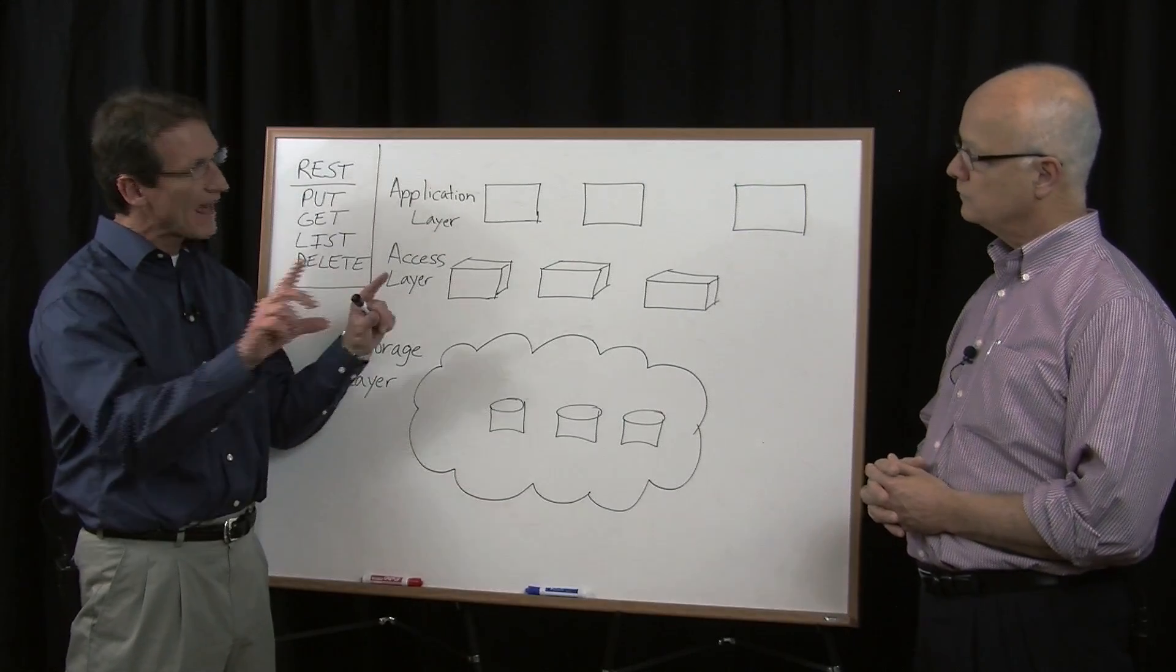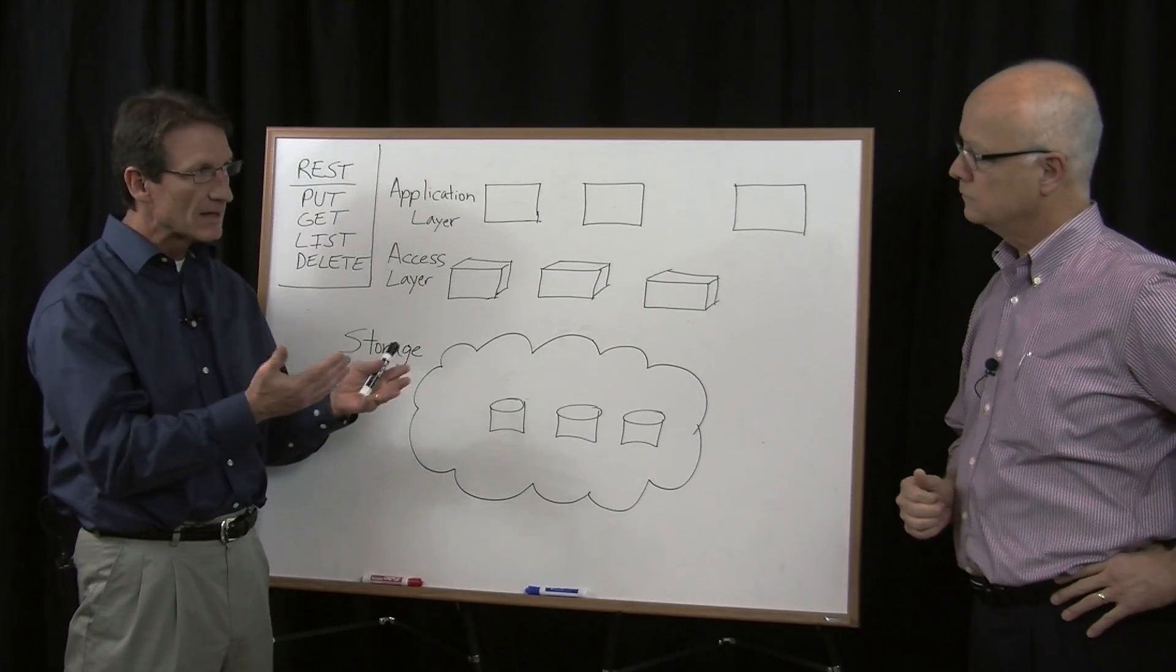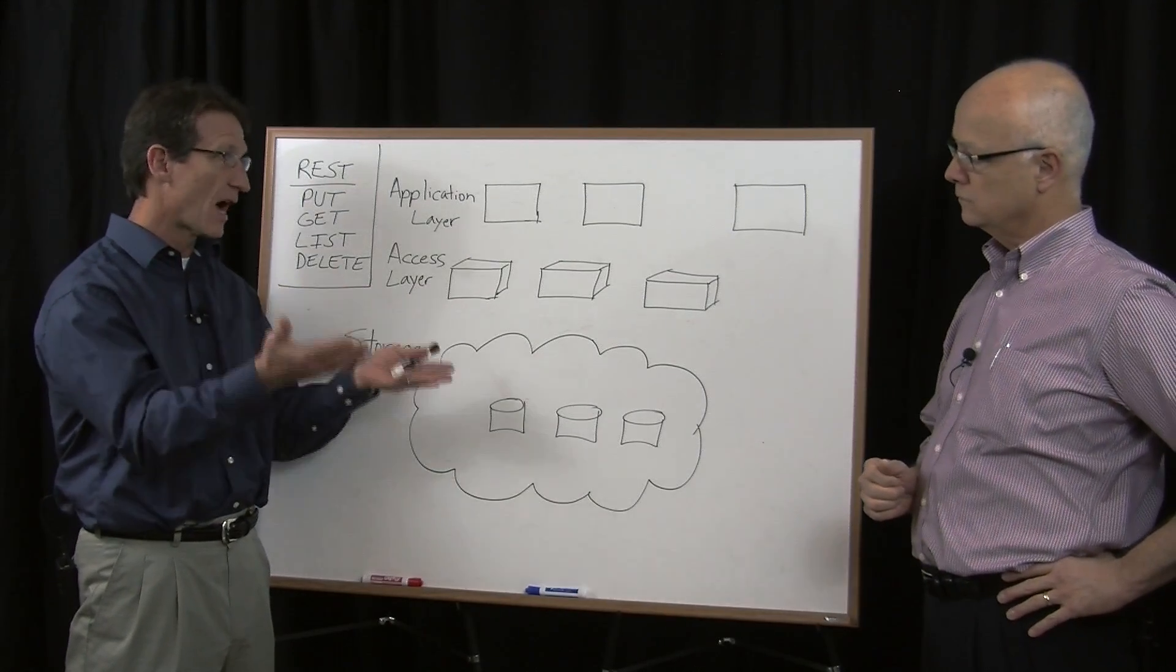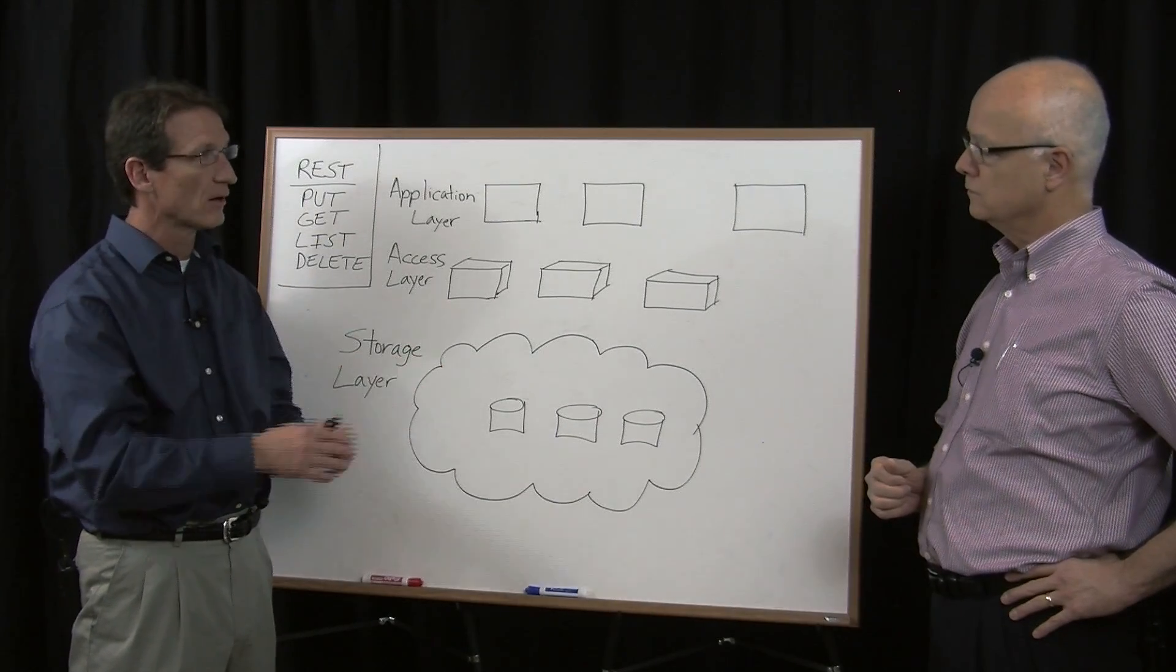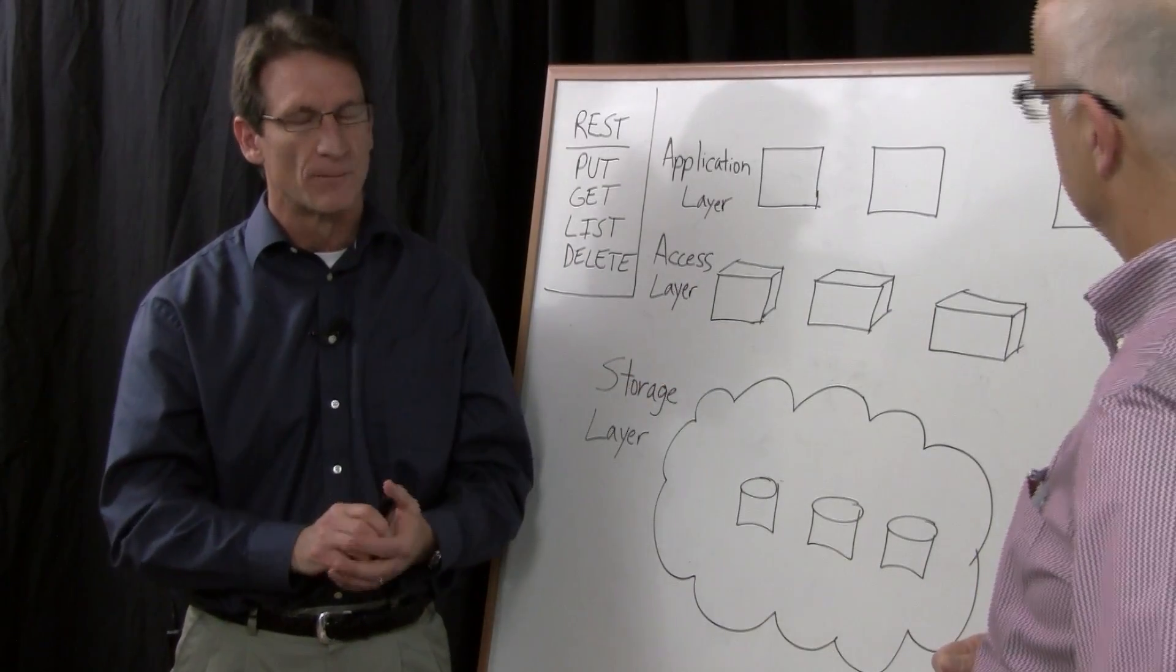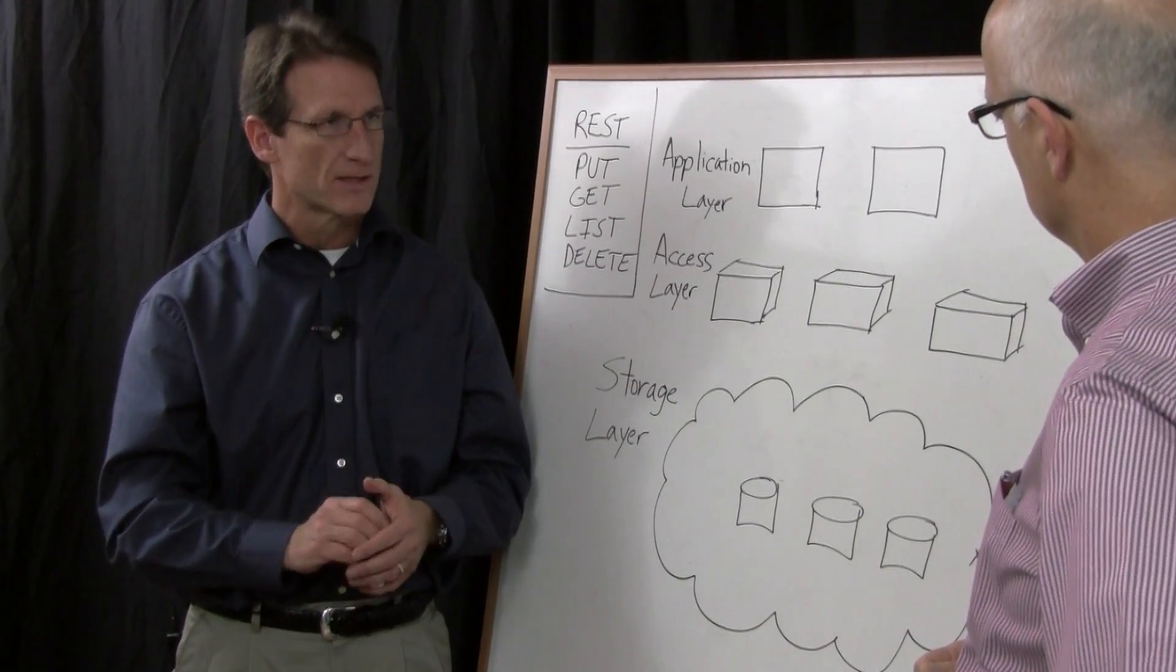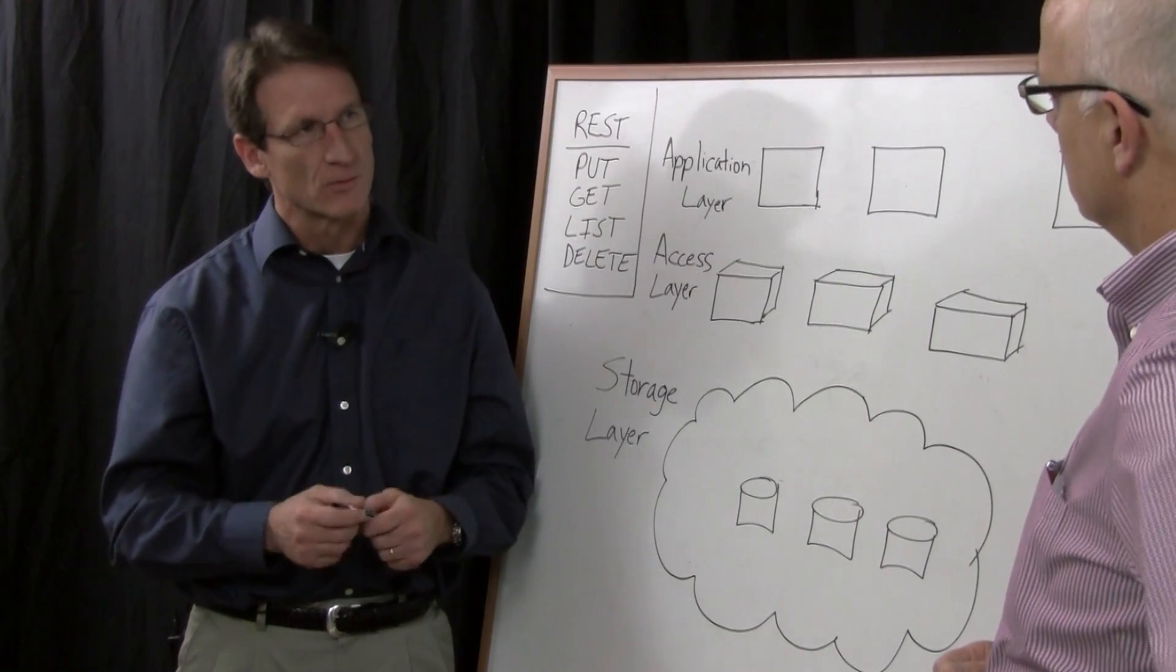Object storage systems have a flatter namespace. Each object in an object storage system is unique. It's identified by what's known as an object ID, and the object ID directs how to find the object, how to locate the object within the system. So that's how it's scalable. But not all object storage systems are the same.